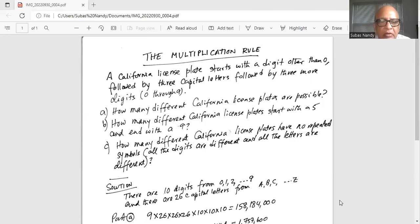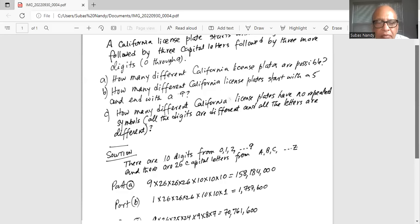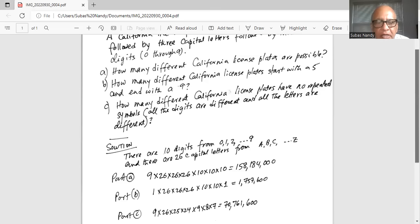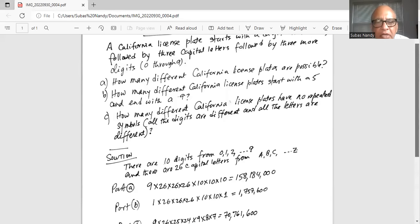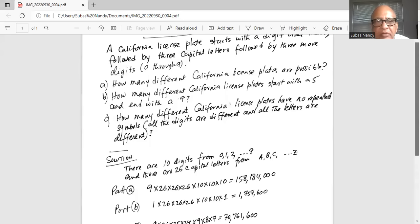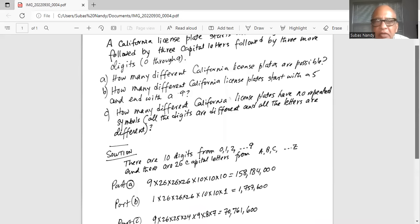There are 10 digits from zero to nine so we cannot use zero in the first place. So the first place in part A we can have nine possible digits and then we have 26 alphabets from A through Z and these alphabets can be repeated.